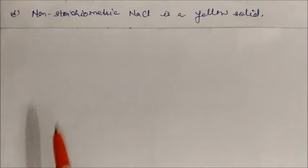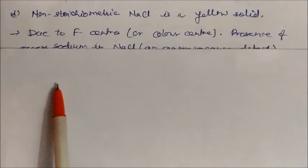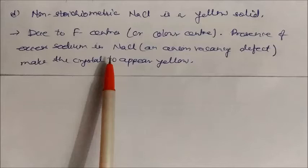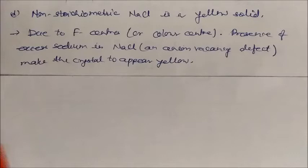Non-stoichiometric NaCl is a yellow solid. This is due to F-centers or color centers: the presence of excess sodium in NaCl creates an anion vacancy defect, which makes the crystal appear yellow in color.